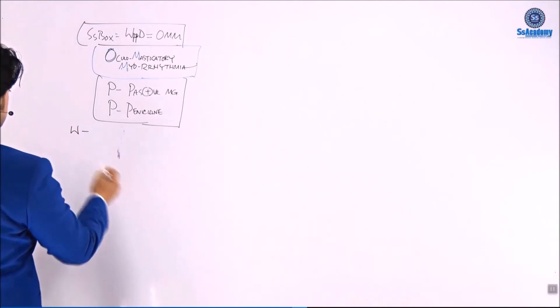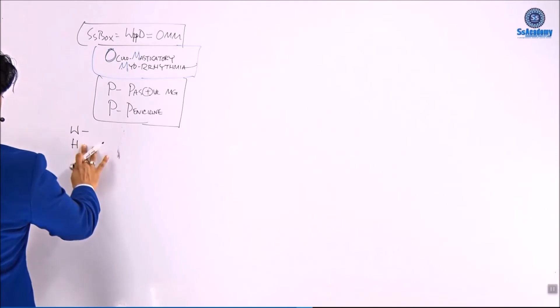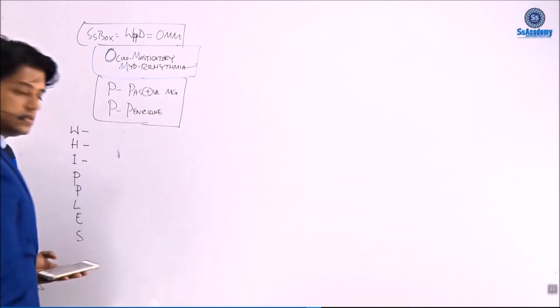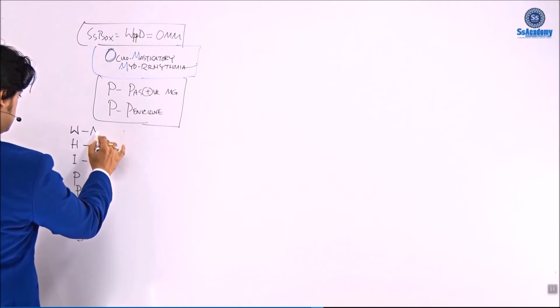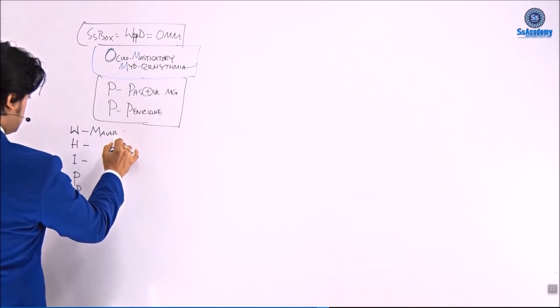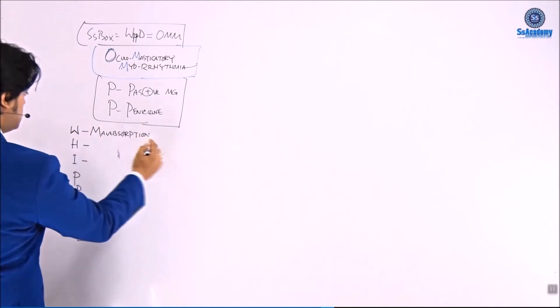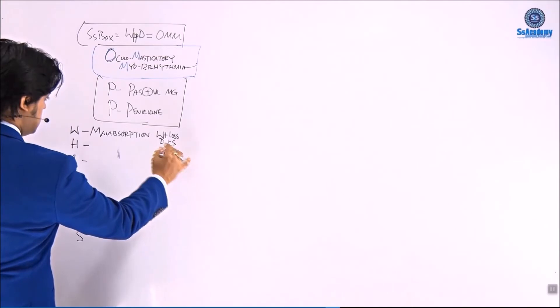Let's start with Whipple's, it's a mnemonic: W-H-I-P-P-L-E-S. W, if you just make W and turn it reverse: malabsorption. W means weight loss, diarrhea, and steatorrhea, bundle pack.